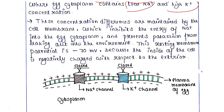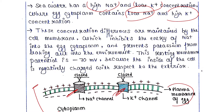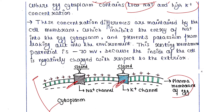The resting membrane potential is minus 70 mV because the inside of the cell is negatively charged with respect to the exterior. In the sea water there is high sodium concentration and low potassium concentration, and in the cytosol there is low sodium concentration and high potassium concentration. The cytosol remains negative, and the sodium and potassium channels are closed.